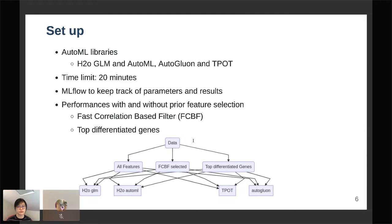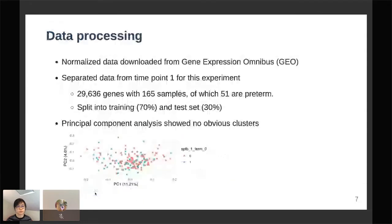Briefly, I have the raw data and then I would feed all features or the FCBF selected features to the four algorithms including the H2O GLM as my base model. I tried to do as little pre-processing as possible. I downloaded the normalized data from Gene Expression Omnibus at NIH and I'm only going to look at time point one for this experiment.